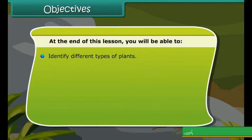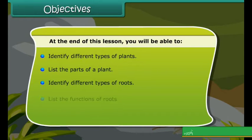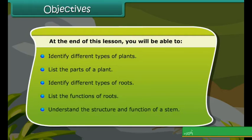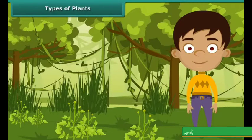Let's find out what are the objectives in this chapter. In this chapter we are going to identify different types of plants, list the parts of a plant, identify different types of root, list the function of roots. We are also going to learn about the function of the stems.